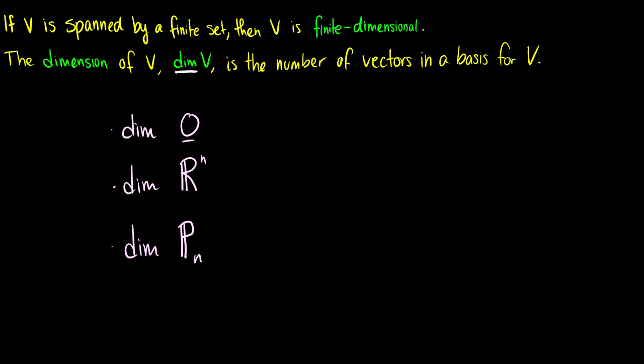For instance, the dimension of the zero space is 0, since it has no vectors in it. What about Rn? How many vectors do we need in a basis for Rn? We need n vectors, so if we have R2 we need two vectors to form a basis.